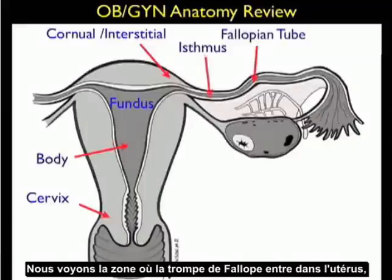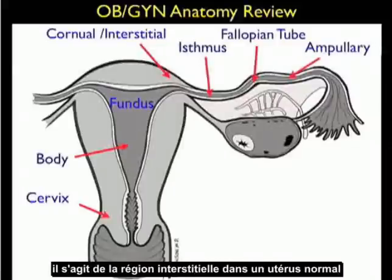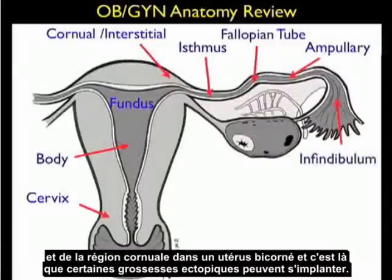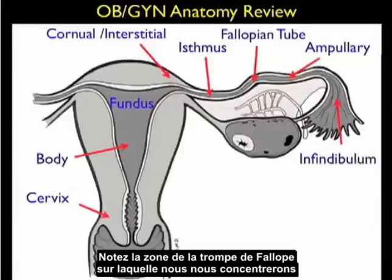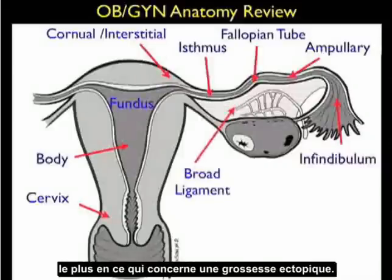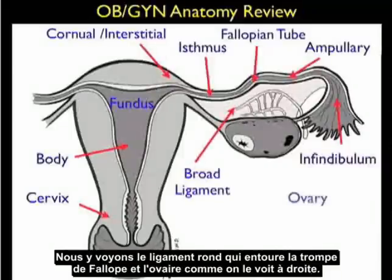We see the area where the fallopian tube enters into the uterus, which is the interstitial region in a normal uterus and the corneal region in a bicornuate uterus — this is where some variants of ectopics can implant. Notice the areas of the fallopian tube to the right, which we'll concentrate more on with regard to ectopic pregnancy, and we see the broad ligament encasing the fallopian tube and the ovary.